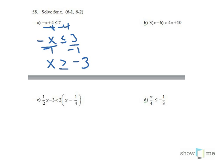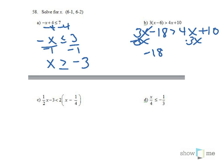In 58B, I'm going to distribute first. 3x minus 18 is greater than 4x plus 10. I'm going to subtract 3x from both sides. So negative 18 is greater than x plus 10.